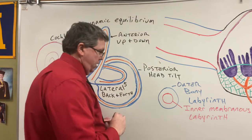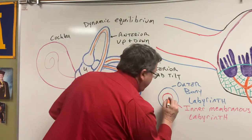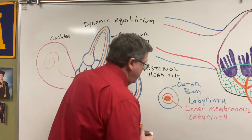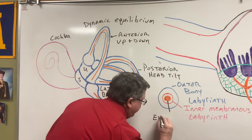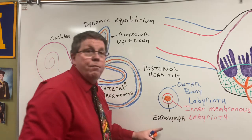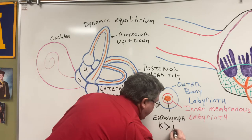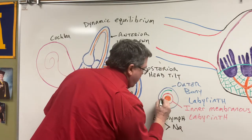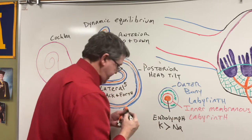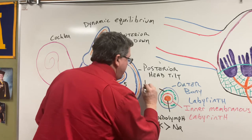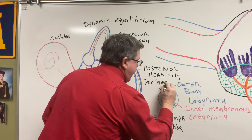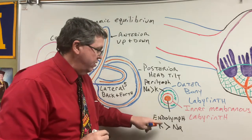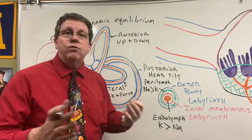In the inner membranous labyrinth I have a fluid shown in orange, and this fluid is called endolymph. If you remember, endolymph has more potassium than sodium. Going around the semicircular canal, I have perilymph, which has more sodium than potassium. So the semicircular duct contains endolymph, and the semicircular canal contains perilymph.